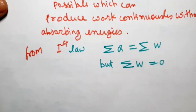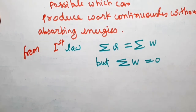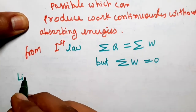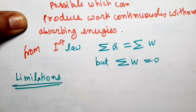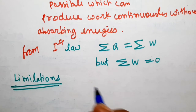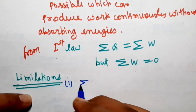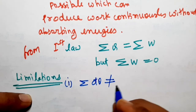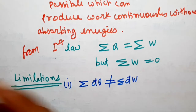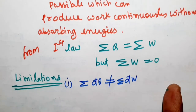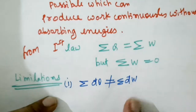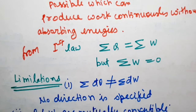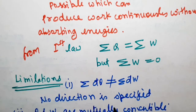There are some limitations of the first law of thermodynamics for the closed system. The first limitation is that sigma delta Q is not equal to sigma delta W when a closed system undergoes a thermodynamic cycle. No direction is specified in this case — no direction is specified for the first law of thermodynamics for the closed system.